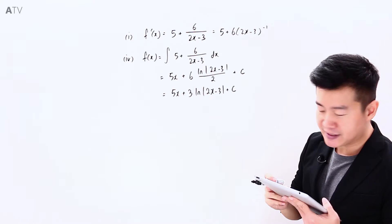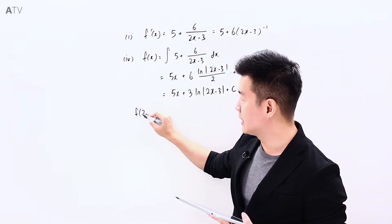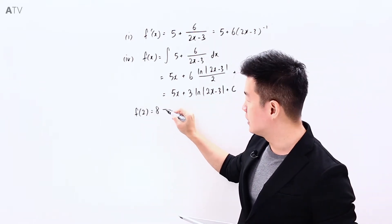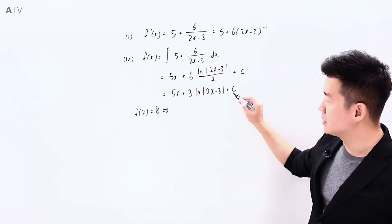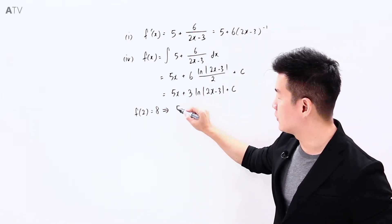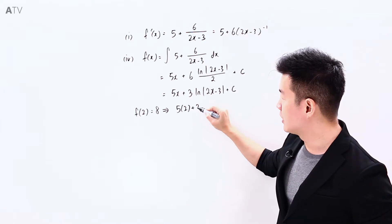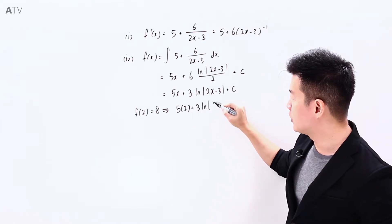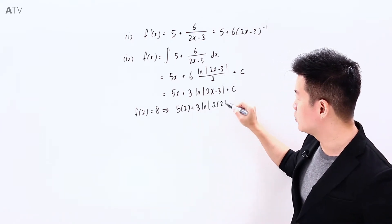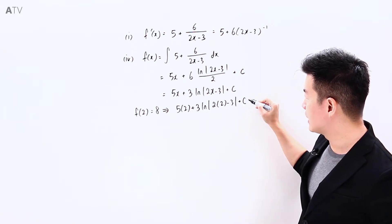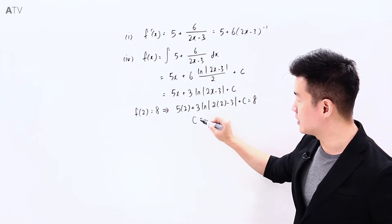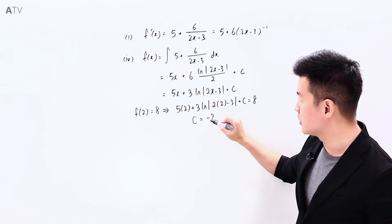And we need to solve for c. The question tells us that f(2) is equal to 8. This means that if I substitute 2 in here, I'm going to be getting 8. So 5 times 2 plus 3 times ln of modulus of 2 times 2 minus 3 plus c. This is equal to 8. This is how I want to solve for c, and c here is going to be equal to negative 2.